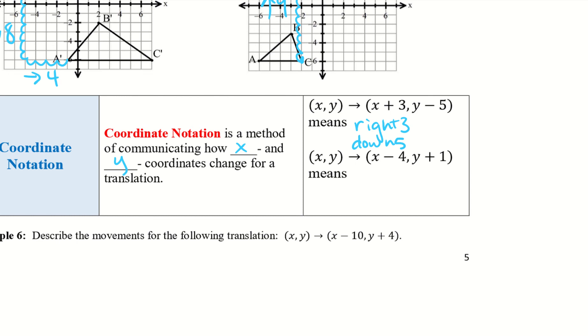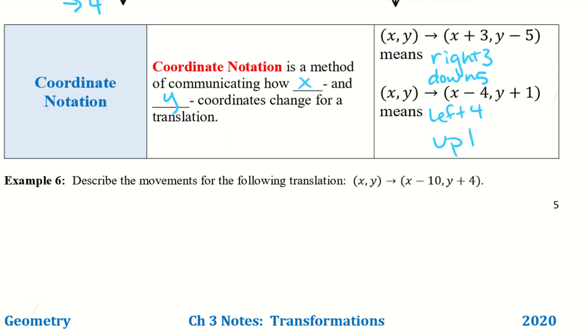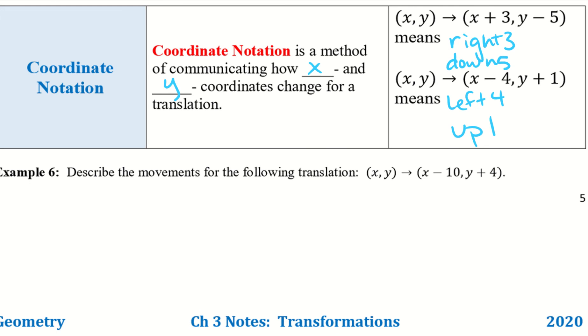Alright, so our second example, if we have X minus 4, that means left 4, and Y plus 1 means up 1. So go ahead and take a look at example 6, and go ahead and see if you can describe the movements with X, Y to X minus 10, Y plus 4. Alright, so hopefully you got left 3, and then up 4. So X is right, left, and Y is up, down. So as long as you remember that, and then positive is right or up, negative is left or down.